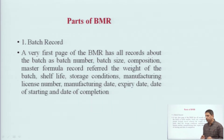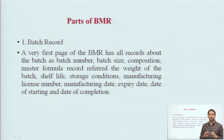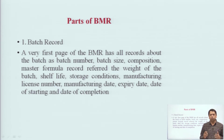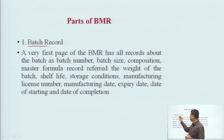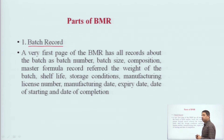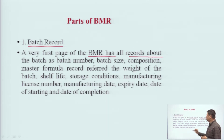Now let us understand the parts of the Batch Manufacturing Record. We have understood the basics of what BMR is, why it is made, and what things are included in it. Now let us understand its parts in a little more detail. The first part is the Batch Record. The very first page of the BMR has all records about the batch.